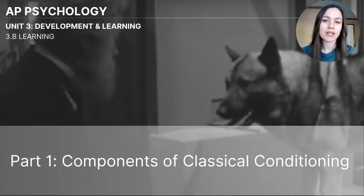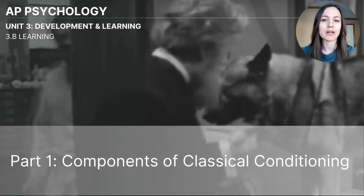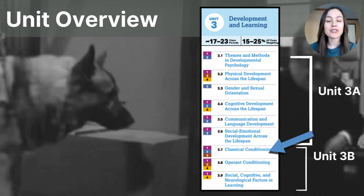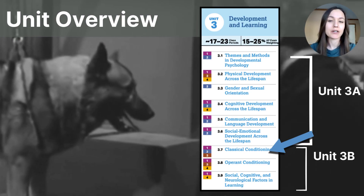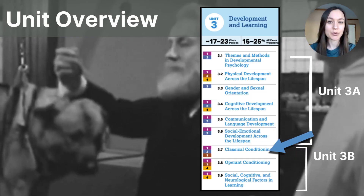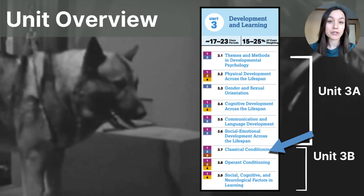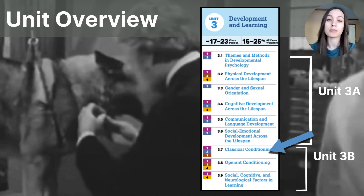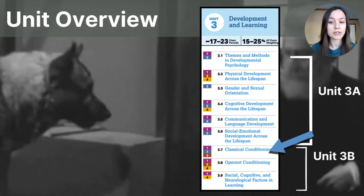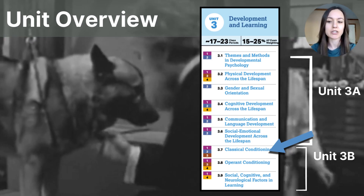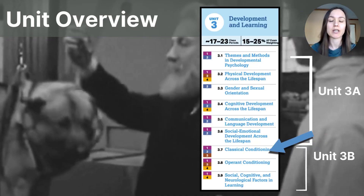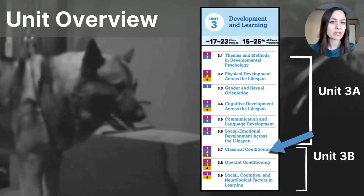Hi everyone! This video is part one of the 3B series on learning for AP Psychology students. This particular video will focus on the components of classical conditioning. As you can see on our unit outline, we are in the second part of unit three, part B, and this section specifically focuses on concepts related to learning. Classical conditioning is the first topic mentioned in the learning section and it will take up two videos. This video lesson will focus on the historical study that discovered classical conditioning, and the next video will go more in-depth with research and real-world applications.